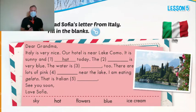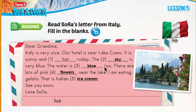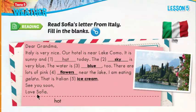Let's go and check it. Okay, let's see how you did. Let's read it one more time together. Dear Grandma, Italy is very nice. Our hotel is near Lake Como. It is sunny and hot today. The sky is very blue. The water is blue too. There are lots of pink flowers near the lake. I am eating gelato — that is Italian ice cream. Yes, ice cream was the last word. See you soon. Love, Sofia.